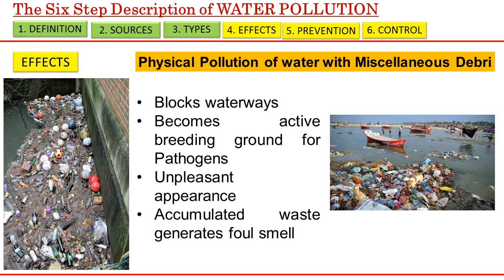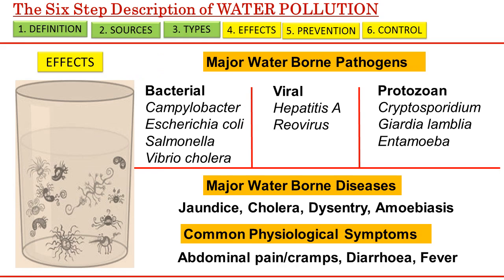The most commonly seen pollutants in water are physical debris such as plastic bags and other miscellaneous garbage on the surface or deep down in water bodies. The effects of such pollution are extremely serious since they can harbor pathogens, block waterways, and lead to multiple effects on the aquatic ecosystem. One of the most serious effects of water pollution are waterborne diseases such as jaundice, cholera, and amoebiasis, caused by bacterial, viral pathogens and certain protozoans. Direct consumption of contaminated water, or food prepared with it, is a sure way of acquiring a waterborne disease.